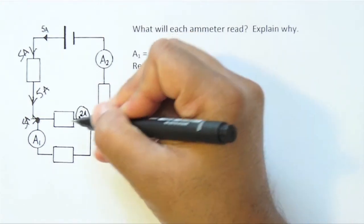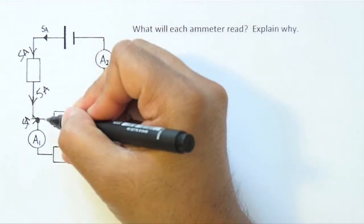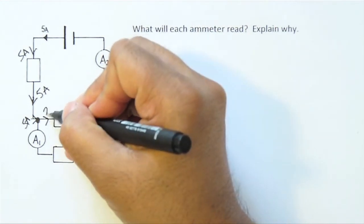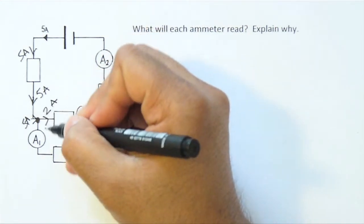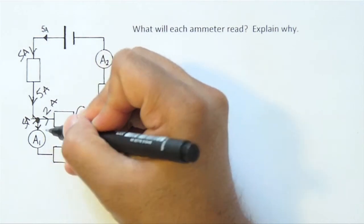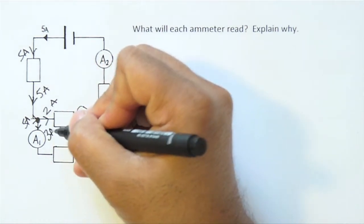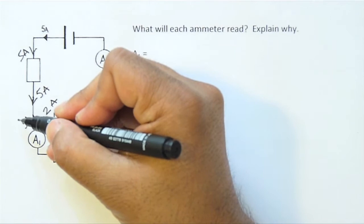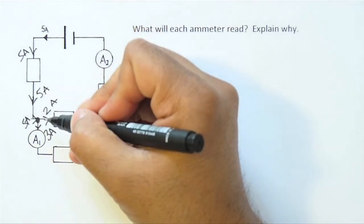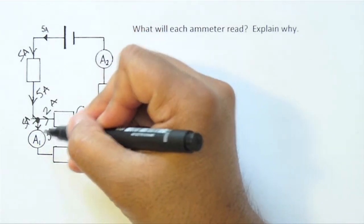This tells us that there's 2 amps flowing out of this resistor, so there must be 2 amps flowing into it. So we can work out that there must be 3 amps in this branch, so that we've got a total of 5 amps flowing in and a total of 5 amps flowing out of this junction.